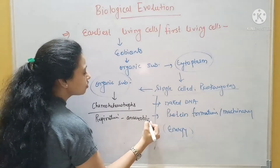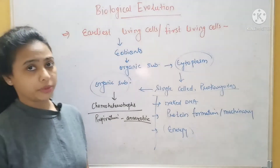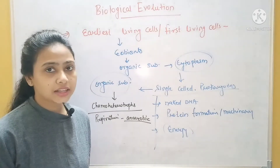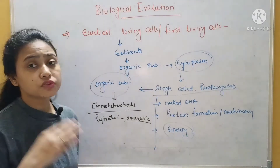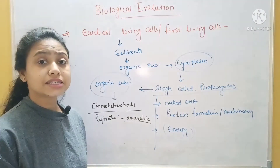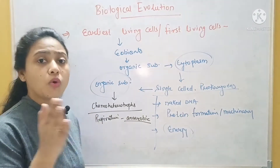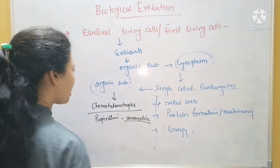After eobions, the first category of single-celled prokaryotes was chemo heterotrophs — taking chemical energy from outside and not making it themselves. And at that time, the environment was reducing and respiration was anaerobic.